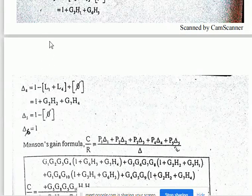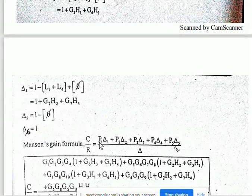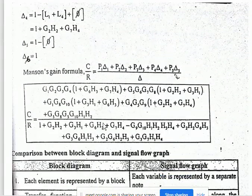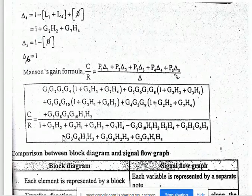After getting all these values, we substitute into Mason's gain formula. C/R = (P1·Delta1 + P2·Delta2 + P3·Delta3 + P4·Delta4 + P5·Delta5) divided by Delta. Substituting P1, P2... and their respective delta values gives us the final control ratio for the given signal flow graph.